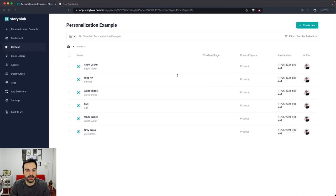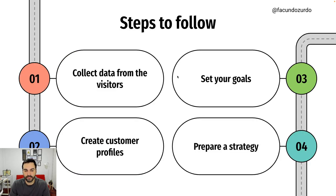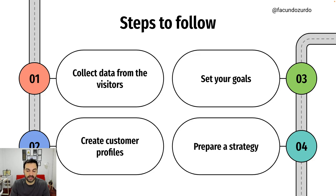This is a simple example of how to implement a personalization strategy. As you can see, we followed all the steps: we collected data from visitors — specifically which catalog they visited first and their product interests; we created a customer profile — a person interested in sportswear; we set our goals — to sell more sportswear products; and our strategy was to offer discounts and specific content on the homepage for that user type. This is a short example meant to trigger you to start thinking about possible personalization strategies and ways of getting data from visitors.